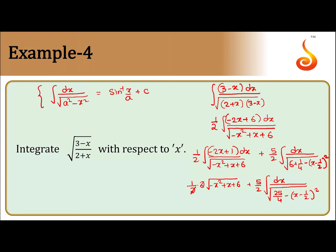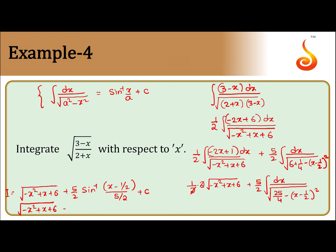The 2s cancel and the final answer is: the square root of (-x² plus x plus 6) plus 5/2 times sin inverse of (x minus 1/2) divided by (5/2) plus C, which simplifies to the square root of (-x² plus x plus 6) plus 5/2 times sin inverse of (2x minus 1)/5 plus C.